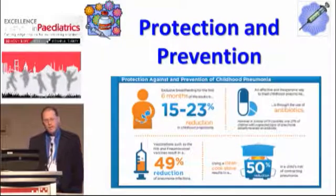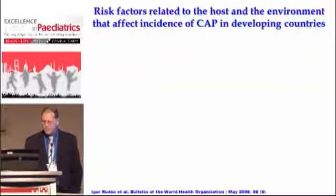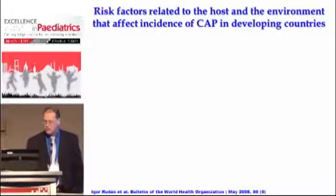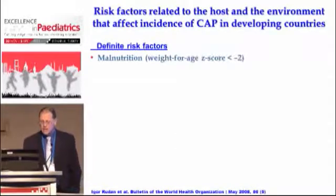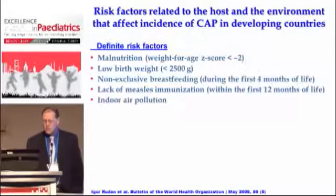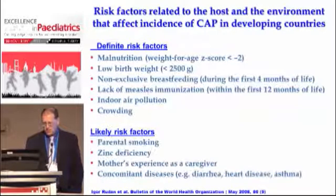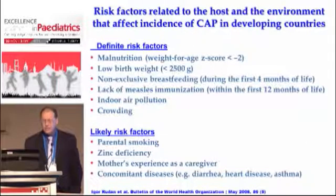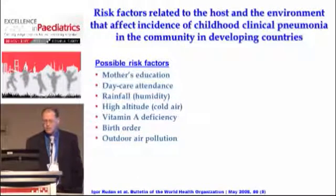Moving from antibiotic treatment to protection and prevention: the WHO lists risk factors related to host and environment that affect community-acquired pneumonia. Definite risk factors include malnutrition, low birth weight, non-exclusive breastfeeding, lack of measles immunization, and indoor air pollution and crowding. Likely risk factors include parental smoking, zinc deficiency, mother experience as a caregiver, and concomitant diseases such as diarrhea. Possible risk factors include mother education, day care center attendance, and others.